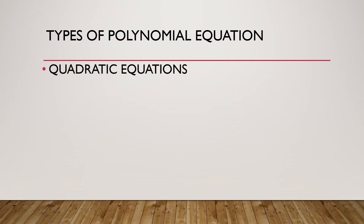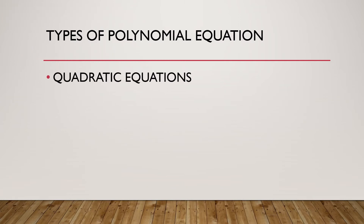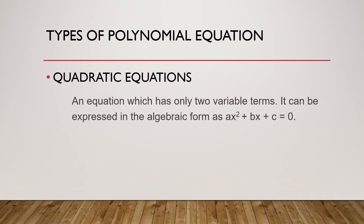The next type is a quadratic equation. It's an equation which has only two variable terms. It can be expressed in the algebraic form as ax squared plus bx plus c equals 0. For example, 5x squared plus 2x plus 1 equals 0.